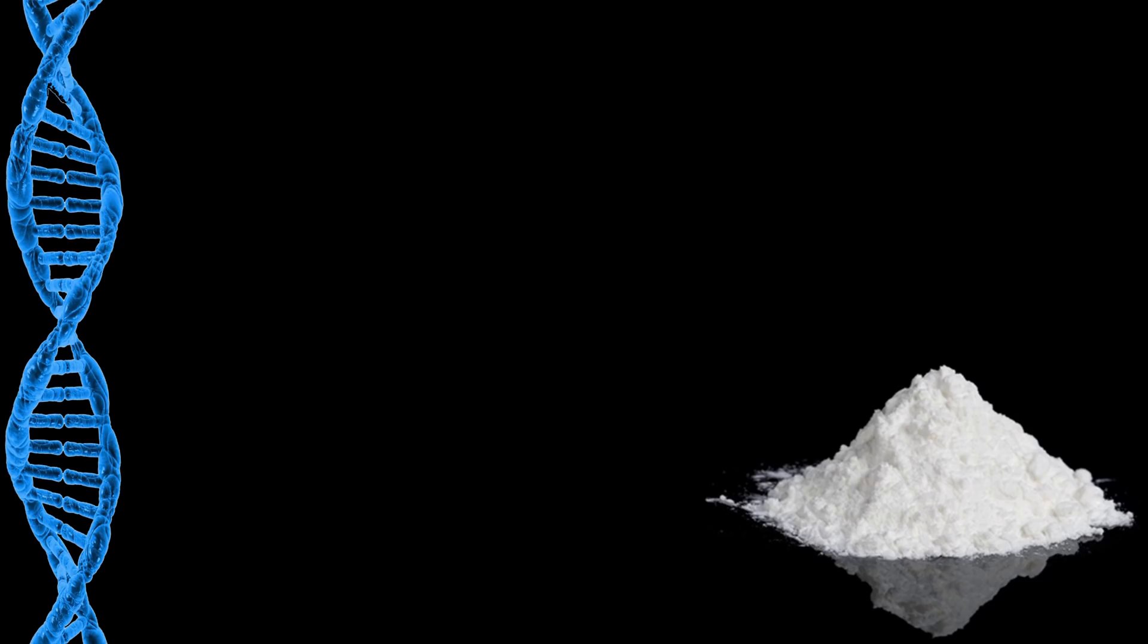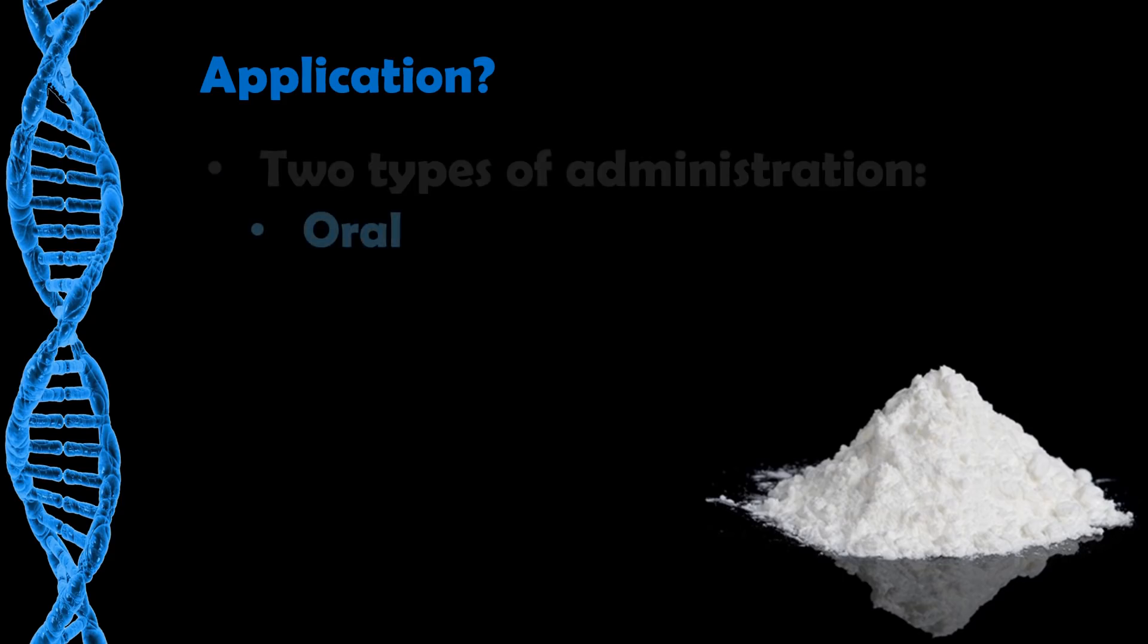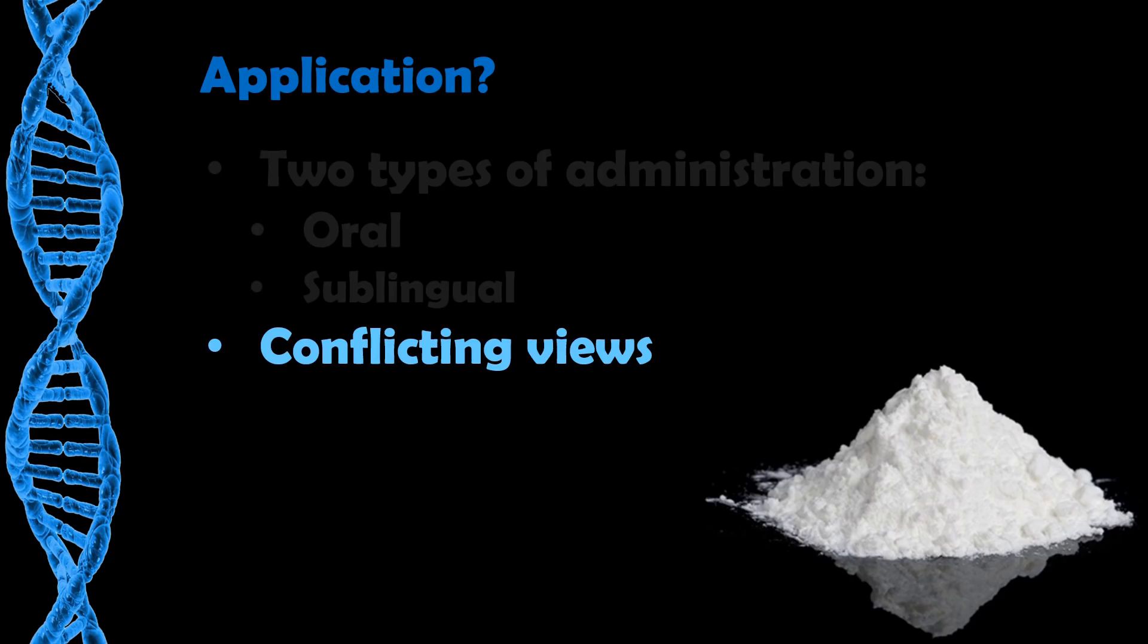So, the next thing you may wish to consider is application or oral or sublingual administration. So, there are two types of administration. The first one we'll talk about is oral. Oral administration is a route of administration where the substance is taken through the mouth and swallowed. Now, this can be in tablet form or you can mix it with a liquid such as water or juice and swallow it. The next form is sublingual administration. This is where the tablet or powder is placed under the tongue and is allowed to dissolve. Now, there are many conflicting views on which form of application or which form of administration is the most effective.